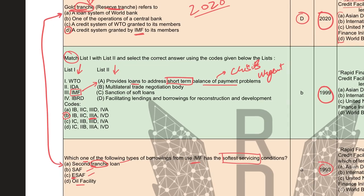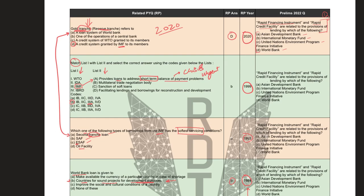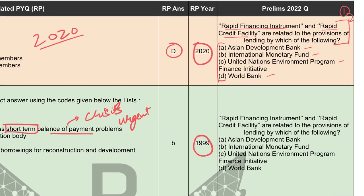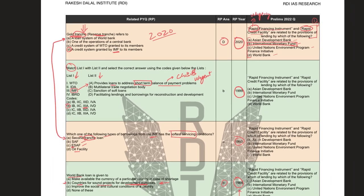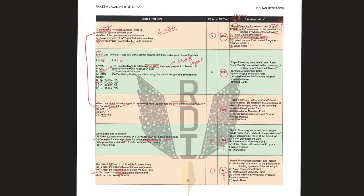We can note that whenever there is an urgent requirement for a short-term crisis like balance of payments, IMF helps. Looking at the 2022 question — it says Rapid Financing Instrument. When rapid financing or rapid credit is needed, there is an urgency. So the best answer in this question has to be IMF. This is how PYQs help in solving questions in Prelims.